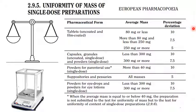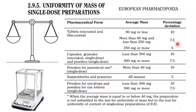For uncoated tablets with an average mass of 80 mg or less, the percentage deviation limit is 10%. If tablet weight is more than 80 mg and less than 250 mg, then 7.5% deviation applies. And if it is 250 mg or more, then you will get 5% deviation in the mass.